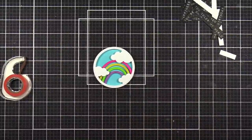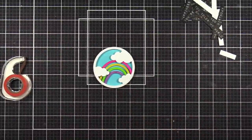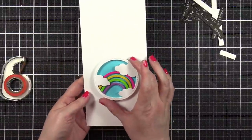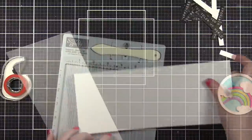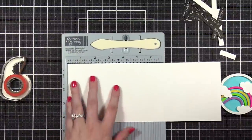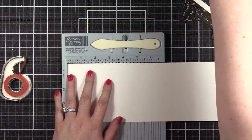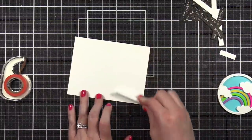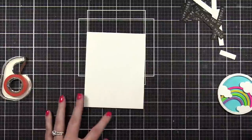I'm gonna put this on an A2 card front, probably just white. Oh, that looks so cute! Scoring it at five and a half. Let me grab my bone folder. This is some more Neenah Classic Crest solar white 110 pound cardstock.